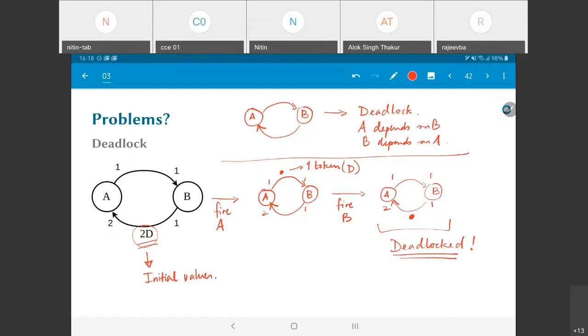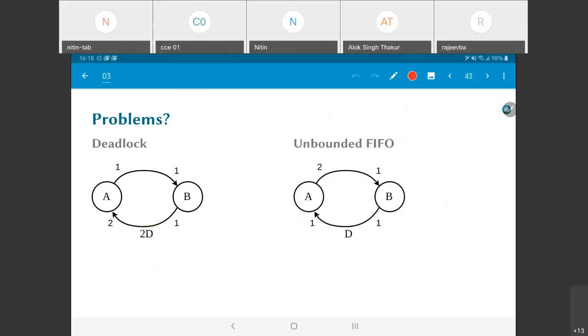The other alternative that could have happened is that I could end up with so called unbounded FIFO. What would this look like? Over here once again if I go through this firing sequence, I fire A and what I end up with is two tokens over here and nothing on the lower edge. If I then fire B and then again B, because after all it has two input tokens over there. What I will end up with is once again two B present over here.